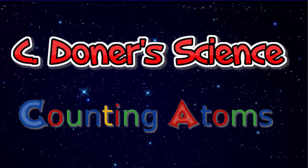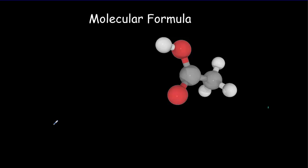Today we're going to take a look at how to count atoms within a molecular formula. So here we've got a molecule, and it's got two carbon atoms, two oxygen atoms, and these smaller ones are hydrogen.